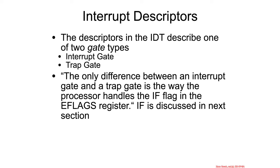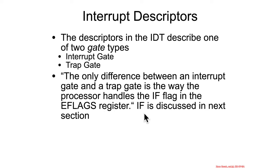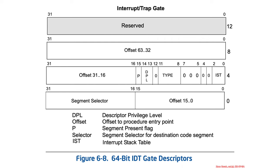So what's in the IDT? Interrupt descriptors are what's in the IDT, and there's two types of descriptors. There are interrupt gates and trap gates, and for all intents and purposes, as far as you're concerned for right now, these two are exactly the same, because the only difference between an interrupt gate and a trap gate is the way the processor handles the interrupt flag in the eFlags register. The interrupt flag is discussed in the next section, so for now let's just treat them as exactly the same thing.